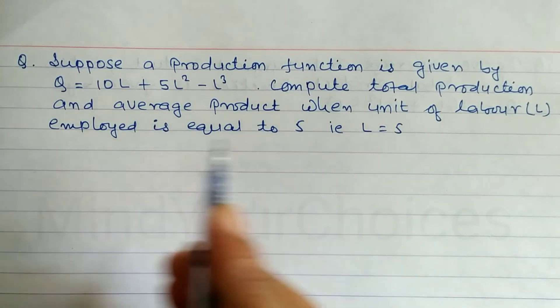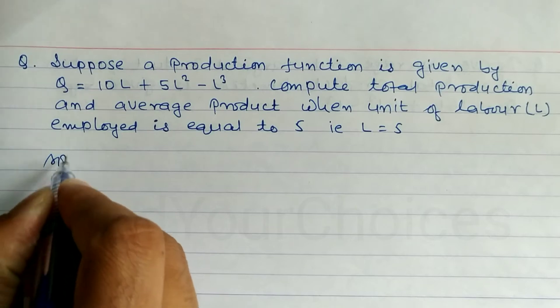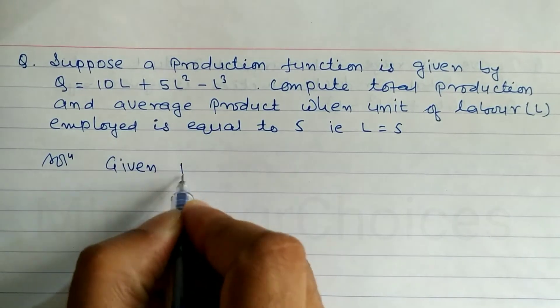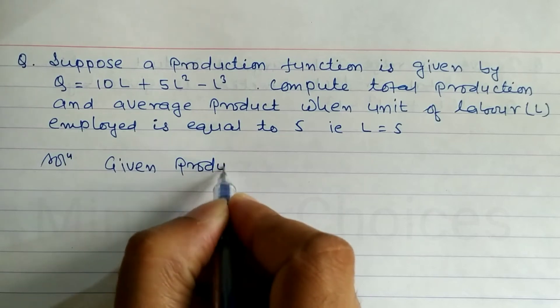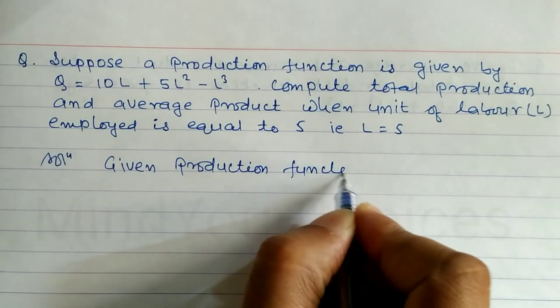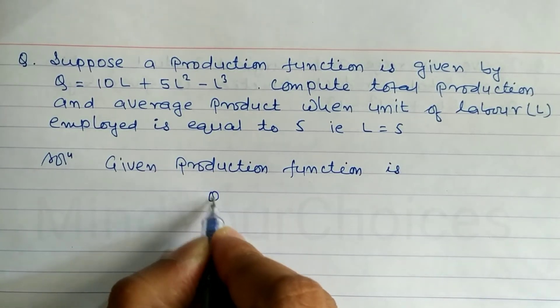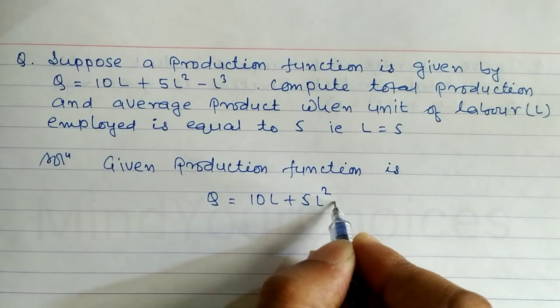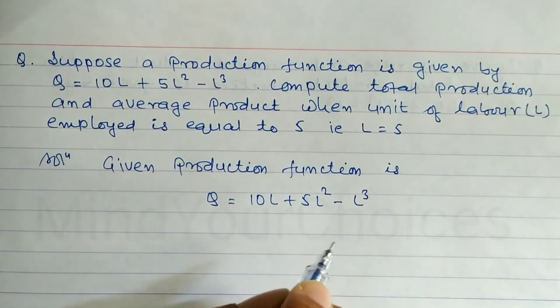Let's start. First of all, we have to write the given production function. The production function is Q = 10L + 5L² - L³.